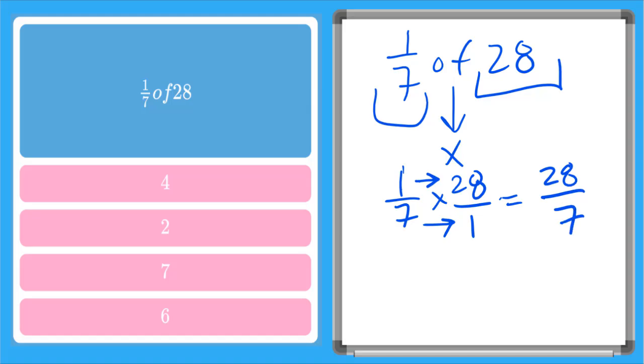So now I have twenty-eight over seven, which is an improper fraction. But I can do a quick little division here. Thinking about your seven fact family, seven goes into twenty-eight four times with zero left over. So our answer is four. Good work.